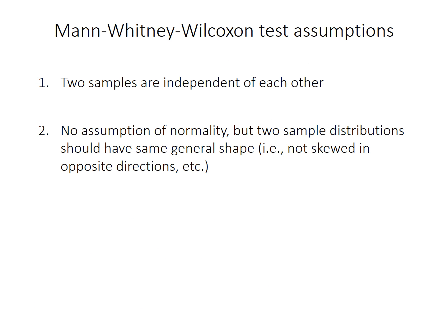There are still some assumptions even though it's a nonparametric test. The two samples must be independent of each other, which is typically the case unless you have repeated measurements on the same objects. There is no assumption of normality — that's the whole point of a nonparametric test — but the two distributions should broadly have the same shape. The test doesn't work well if they're highly skewed in opposite directions, for example.